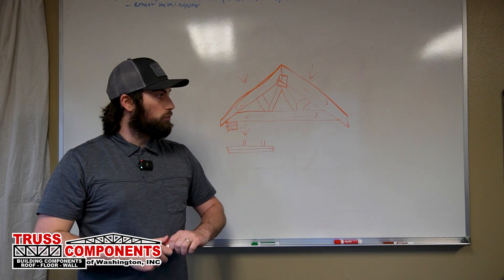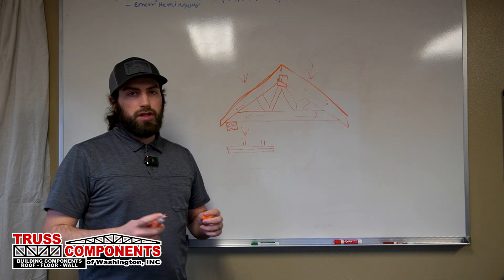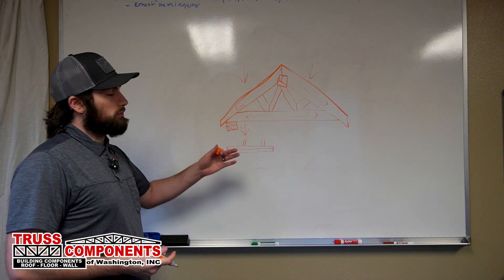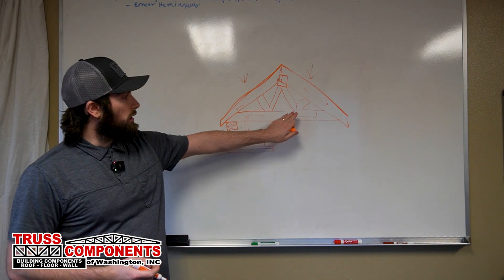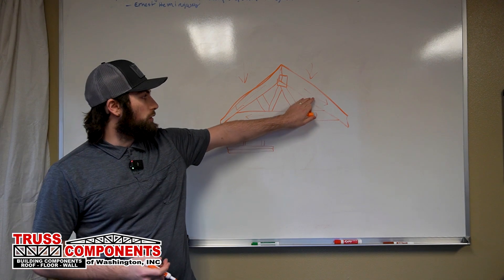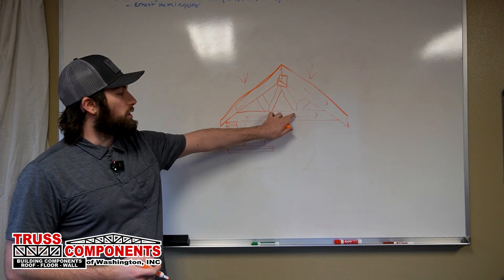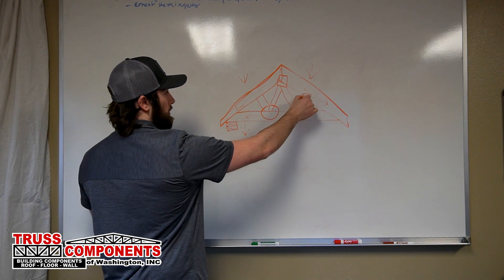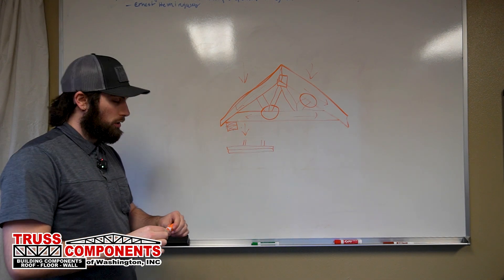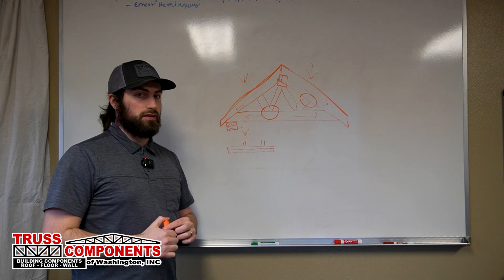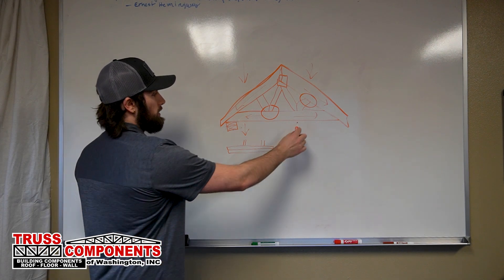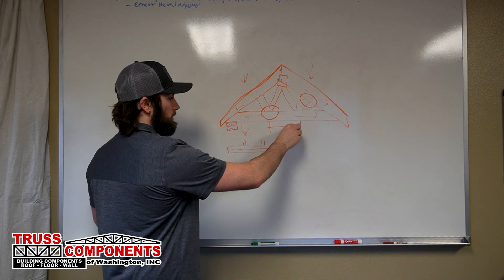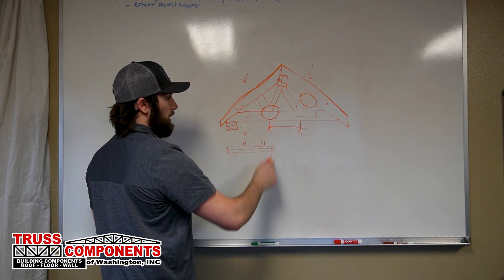So we have certain ways to refer to the connecting points of these webs and chords and the spaces between. Where the webs connect with the bottom chord or the top chord, we refer to those as a joint, and then the spaces between those joints we refer to as a panel.